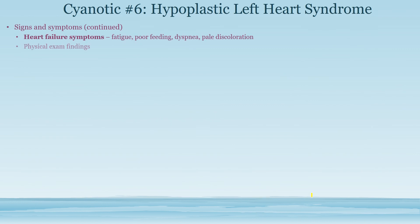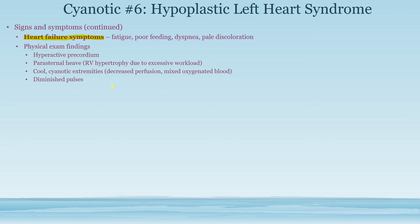Heart failure symptoms are present because the right ventricle has to pump to the entire body, and it is not designed to do that. Physical exam findings include a hyperactive precordium — there's a lot of blood going to the lungs and in the right ventricle. You'll also get a parasternal heave and right ventricular hypertrophy because so much blood is going to the right side, causing the right ventricle to become dilated and hypertrophic. You'll also get cool cyanotic extremities and diminished pulses because you can only get blood to the aorta through the PDA.